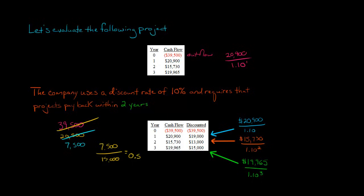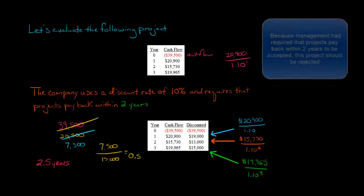So we know that the project paid back sometime between year two and year three, and so clearly it's 2.5 years is the discounted payback period for this project.